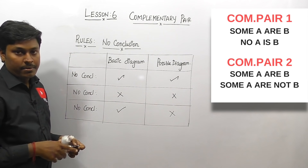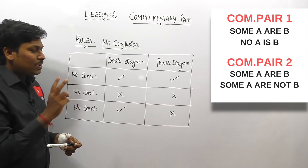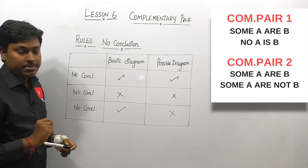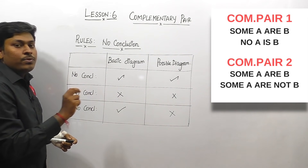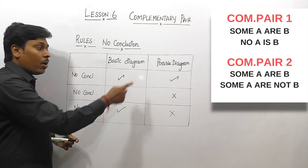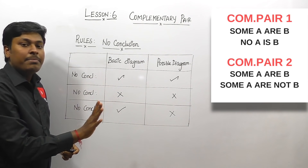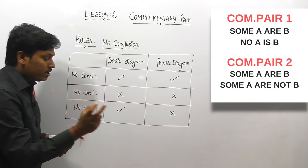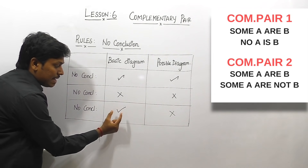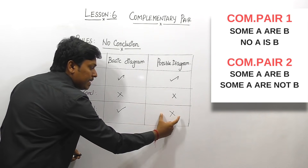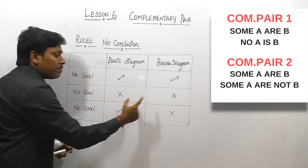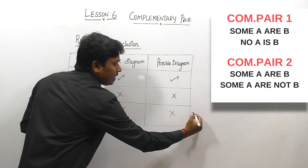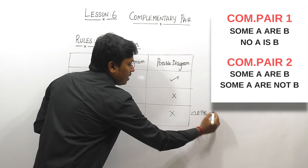Don't forget to watch lesson number two, which covers conclusions based on 'No'. The second rule is: if the 'No' conclusion is false in both the basic diagram and the possible diagram, you should not say it is a complementary pair — don't go with 'either or'. You should go for 'either or' only when the 'No' conclusion follows rule number three: true in the basic diagram and false in the possible diagram.